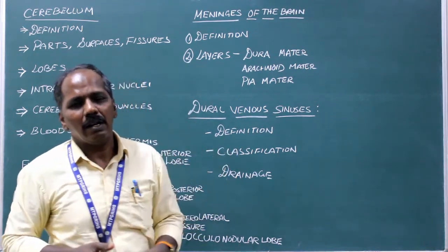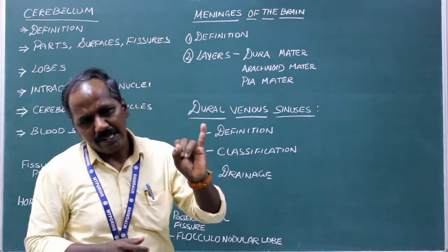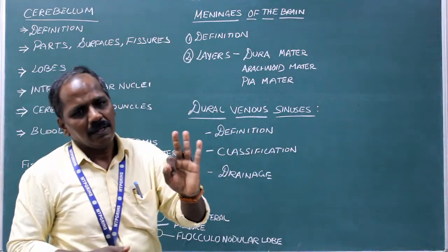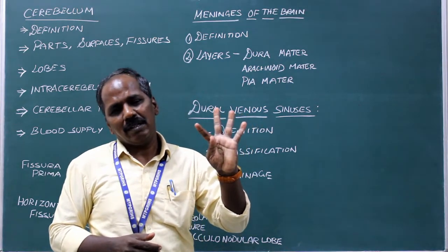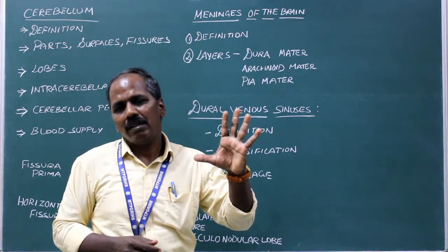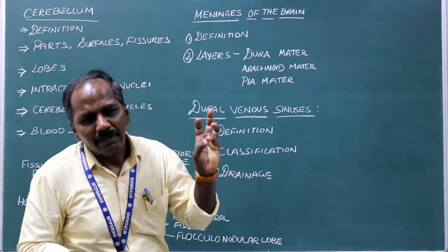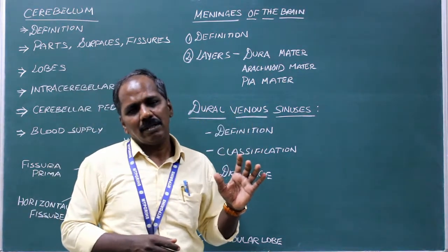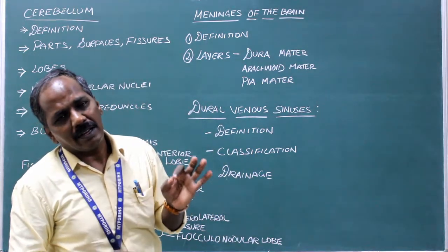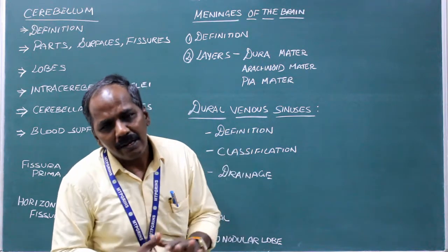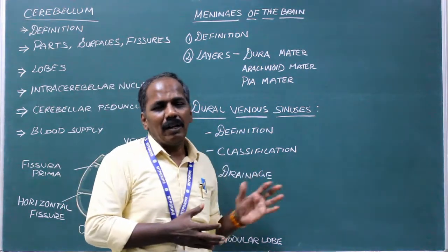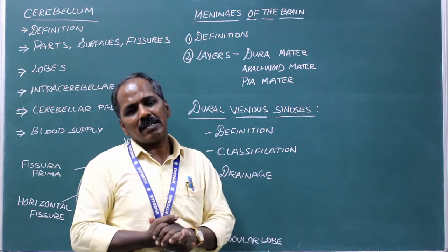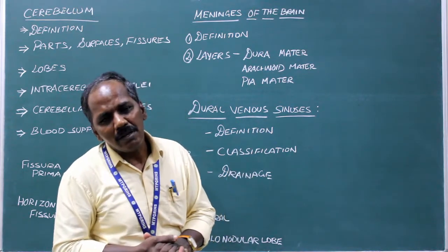The dural venous sinuses are: number one, superior sagittal sinus; number two, inferior sagittal sinus; number three, straight sinus; number four, right and left transverse sinus; number five, right and left sigmoid sinus; number six, right and left superior petrosal sinus; number seven, right and left cavernous sinus. The first three are unpaired dural venous sinuses; the remaining are paired. All these dural venous sinuses drain into the internal jugular vein.